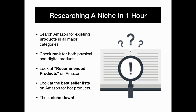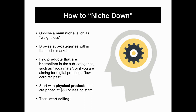Quick and easy niche research methods: research a niche in under one hour. Start by searching Amazon for existing products in all of the major categories. Check the rank for both physical and digital products. Then look at the recommended products on Amazon to uncover additional products worth promoting, and look at the best selling lists on Amazon for hot trending products. Then it's time to niche down — choosing a main niche such as weight loss, then browsing subcategories within that niche market. Find products that are best sellers in subcategories such as yoga mats, or for digital products, low carb recipes. If you are starting with physical products, try to promote those priced at $50 or less to start.